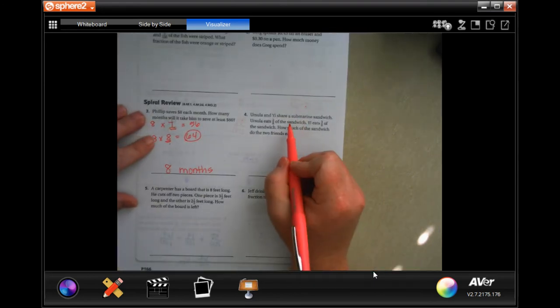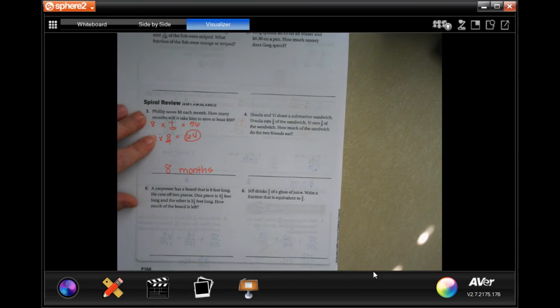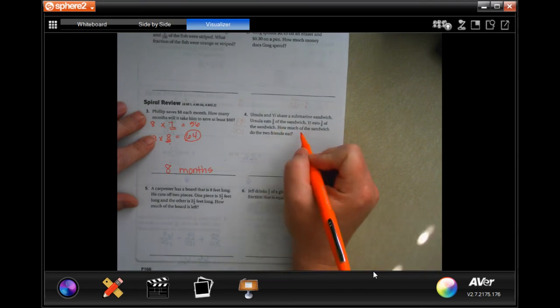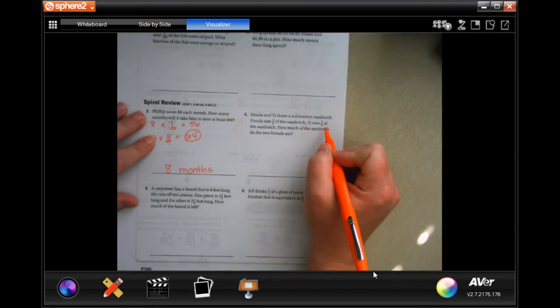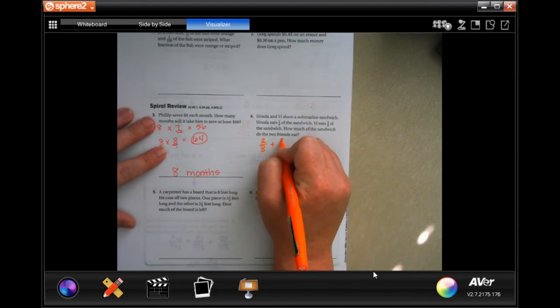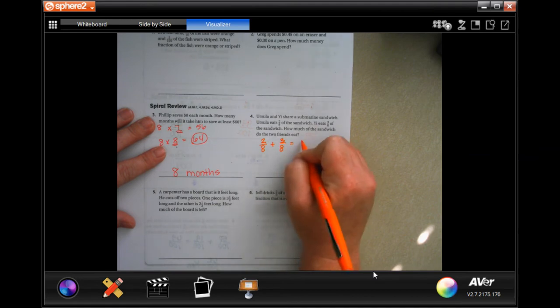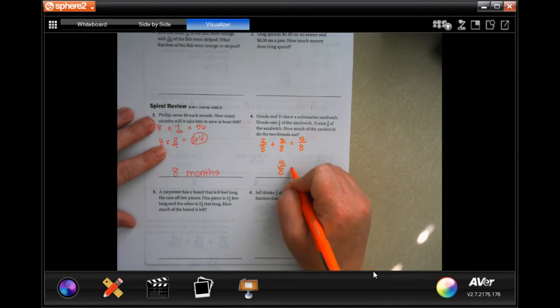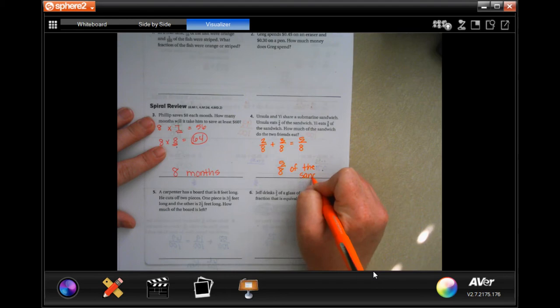Ursula and Me share a submarine sandwich. Ursula eats 2 eighths of the sandwich. Me eats 3 eighths of the sandwich. How much of the sandwich do the two friends eat? Well, 2 eighths plus 3 eighths. We keep our denominator and 2 plus 3 is 5. So, 5 eighths of the sandwich.